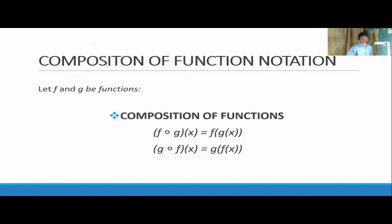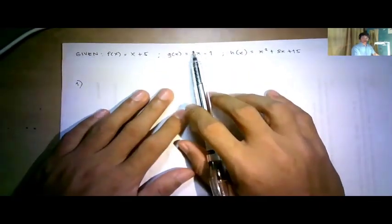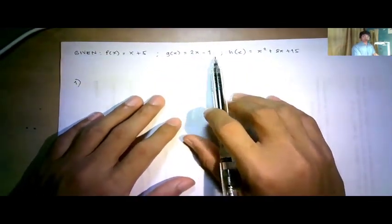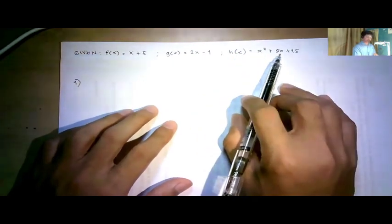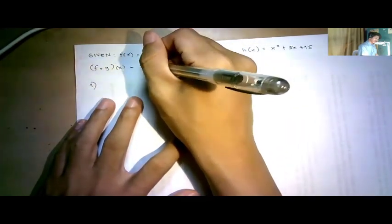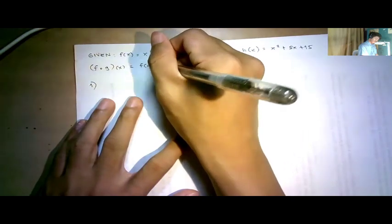Let's have examples using the same functions: f(x) = x + 5, g(x) = 2x - 1, and h(x) = x² + 8x + 15. For composition: (f∘g)(x) = f(g(x)).